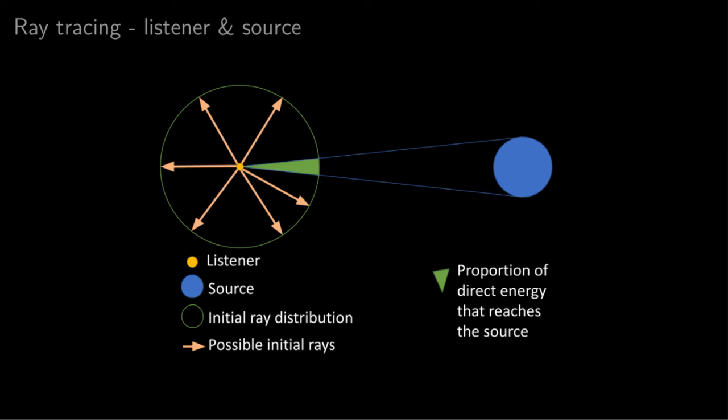Before I keep going with the explanation, I want to specify that we usually throw the rays backwards from the listener to the sources, rather than the normal way around. This allows us to throw significantly less rays for the same resolution when there is more than one source in the scene. In the pictures shown in the presentation, the rays are thrown backwards, so don't get confused by it.